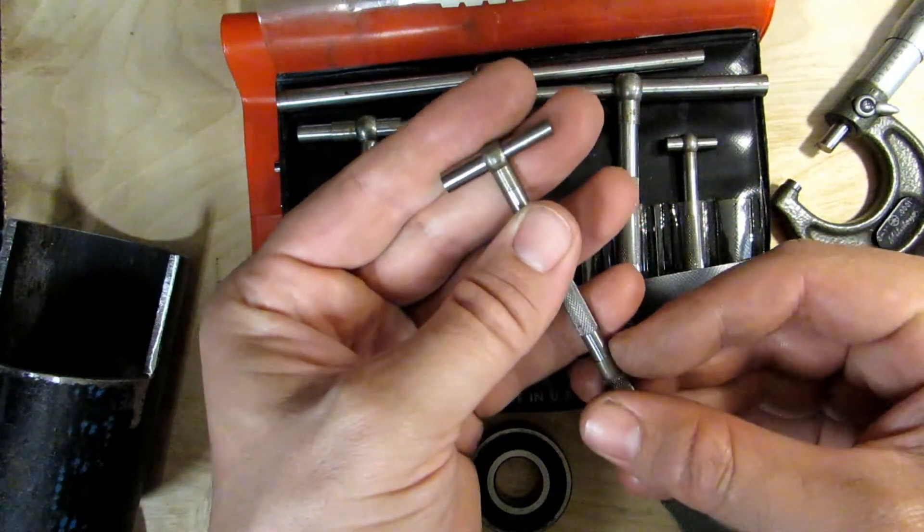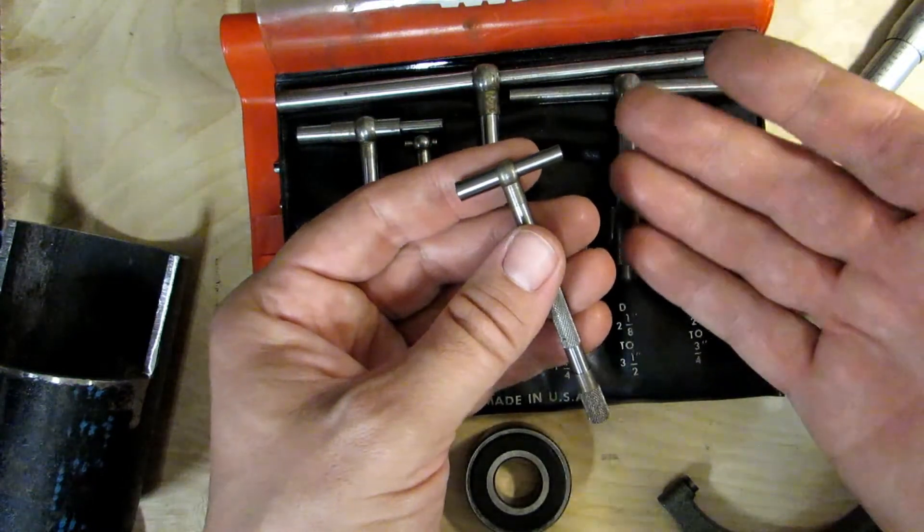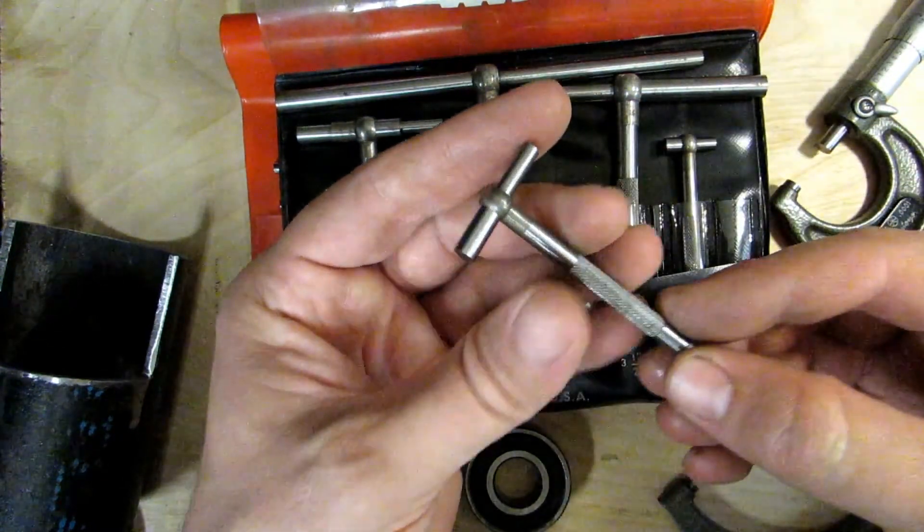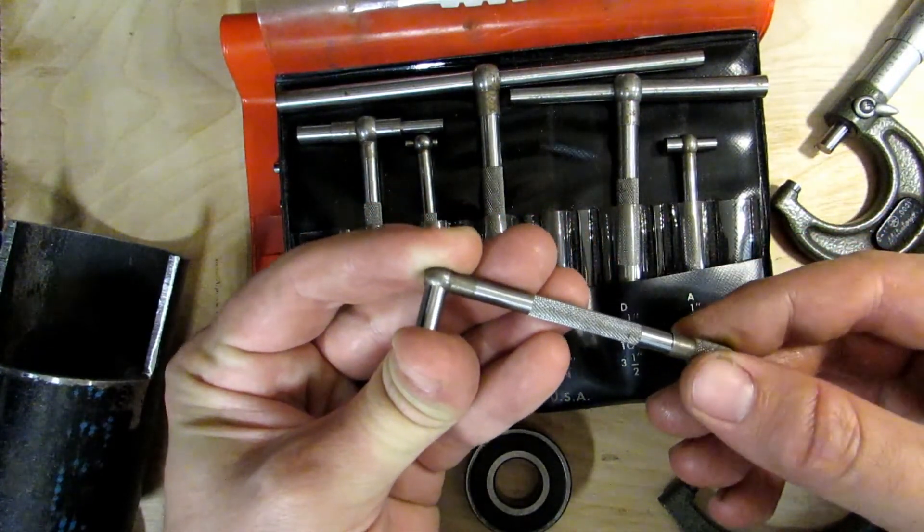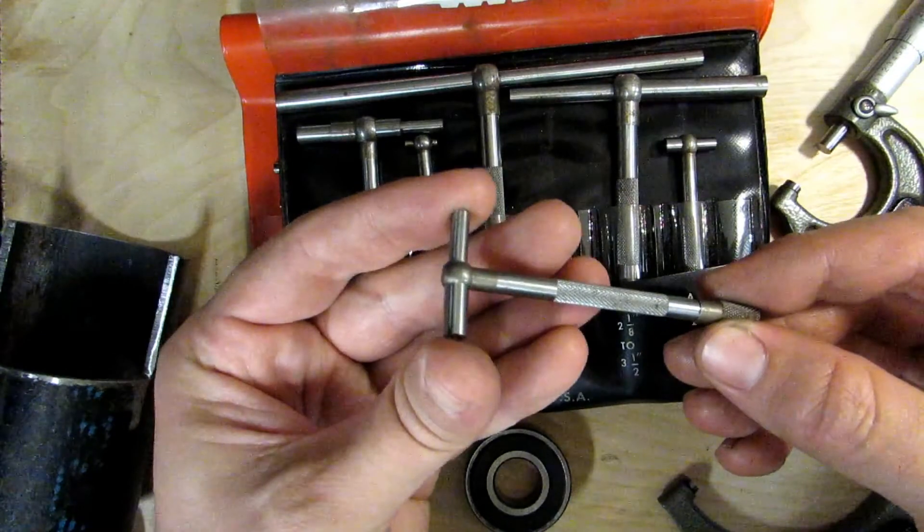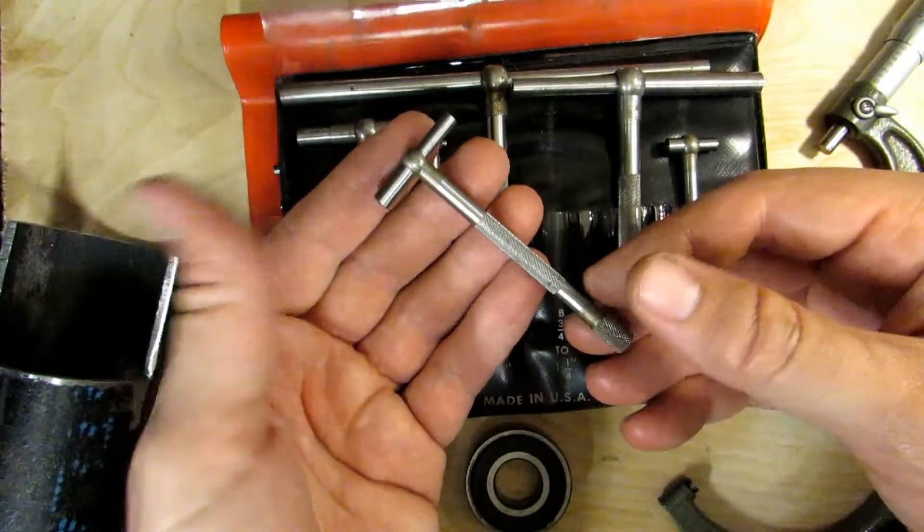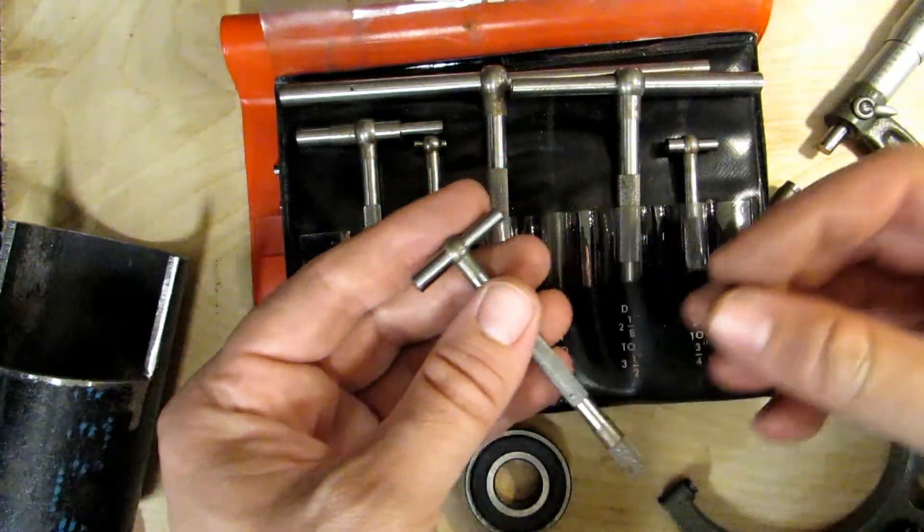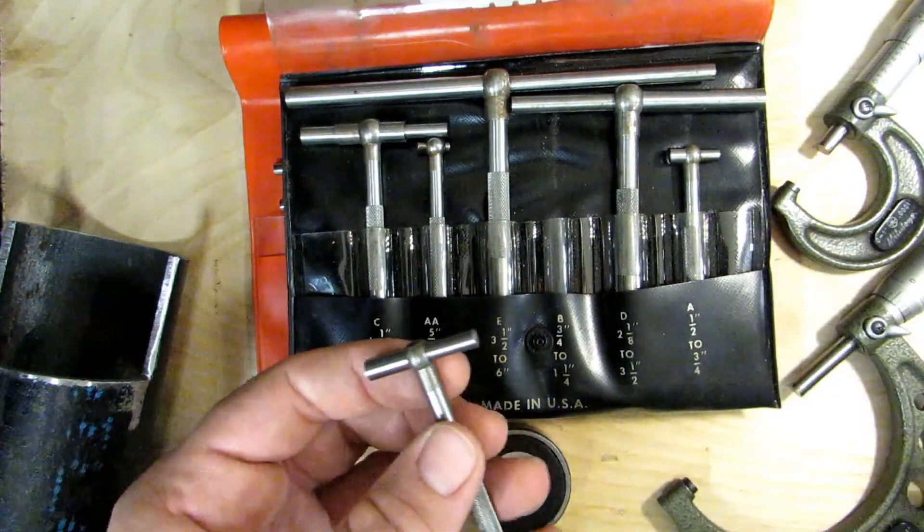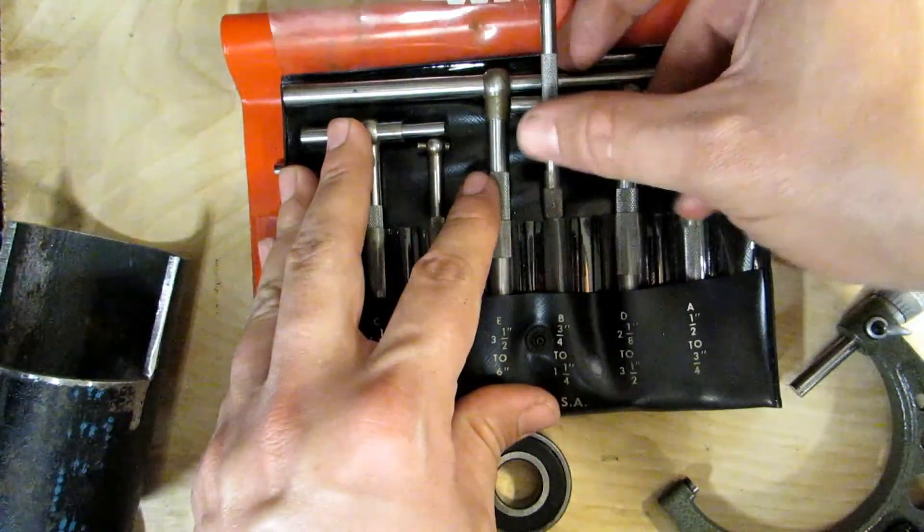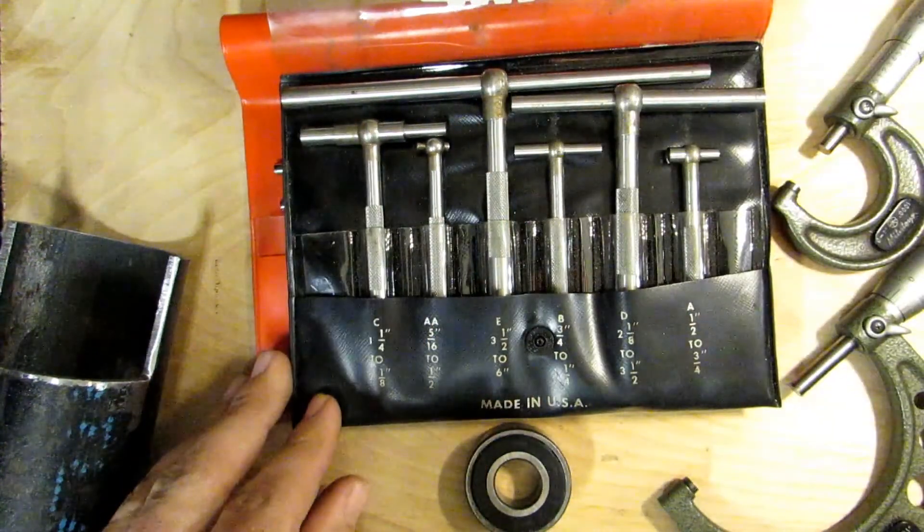You can find these pretty often at flea markets and swap meets and things like that. So if you see one of these and it's not covered in a bunch of rust and it's not missing pieces, pick one up. You can usually get them for maybe around 20 or 30 dollars at flea markets. As far as measuring bores go, it's pretty much one of the cheapest tools out there that you can buy, especially on the used market. Anyway, I hope this helps, and if anyone has any questions, feel free to leave them in the comments. Until then, I'll see you next time.